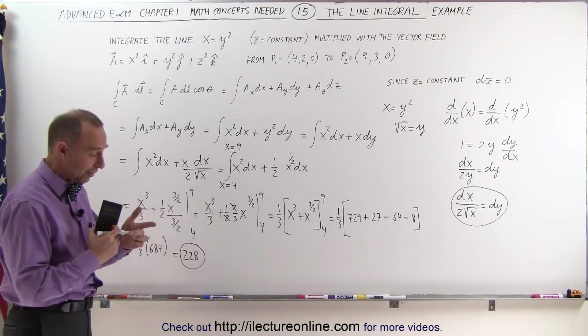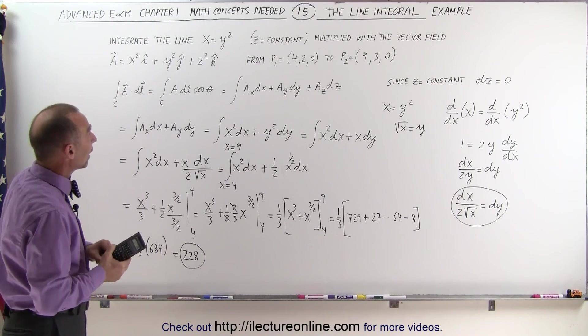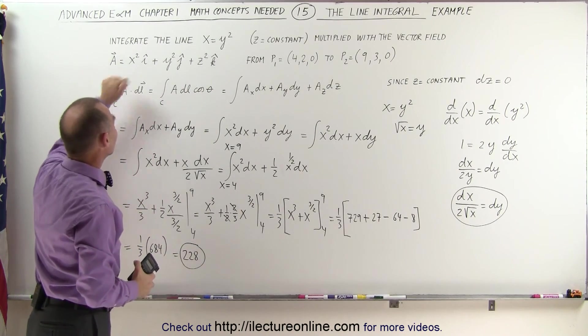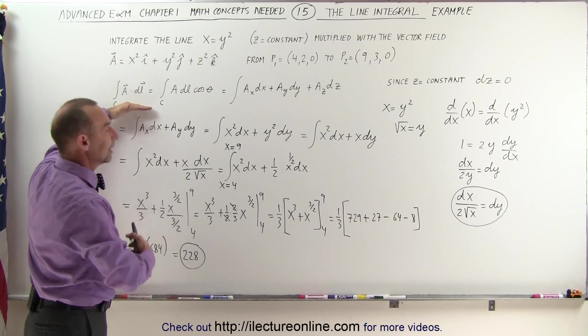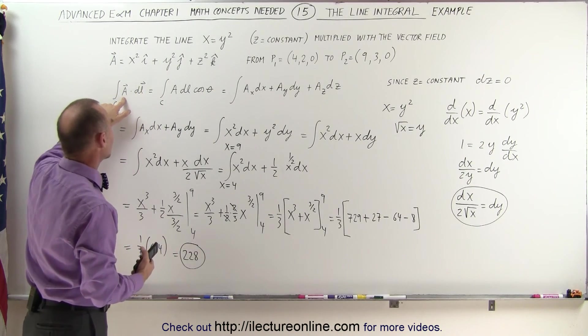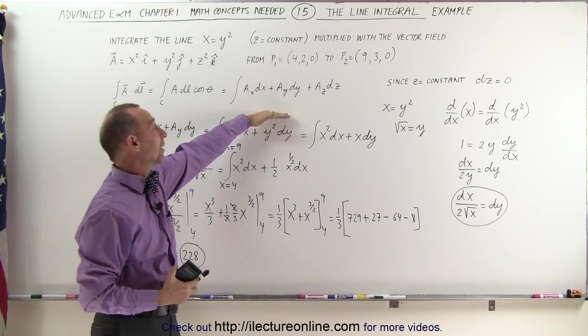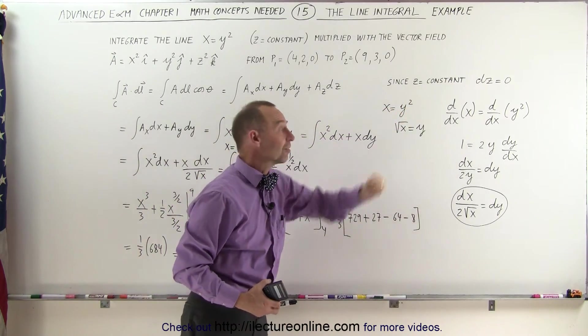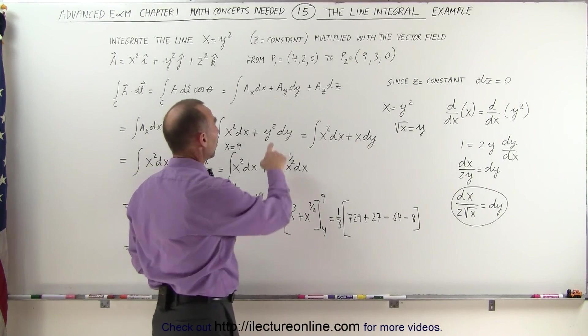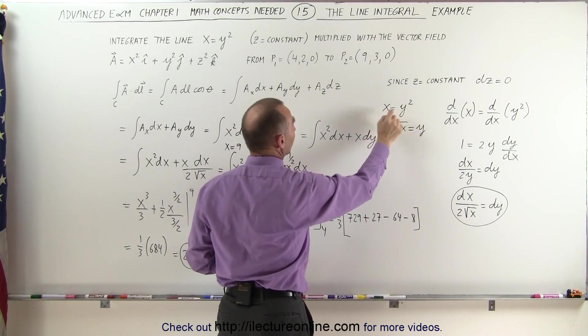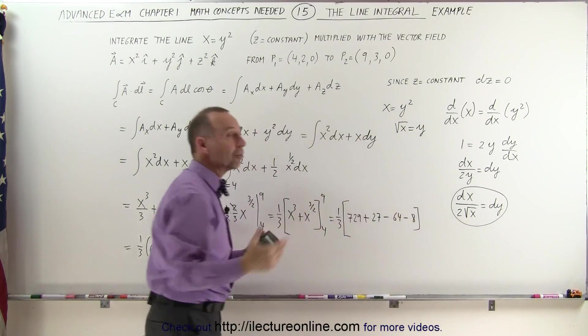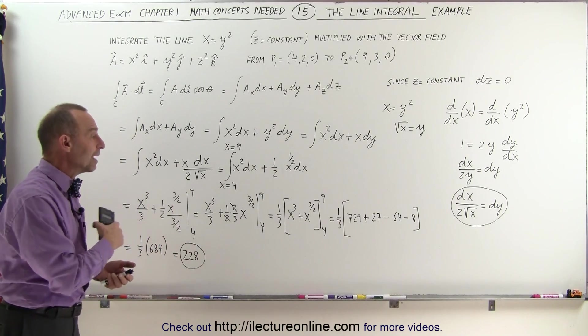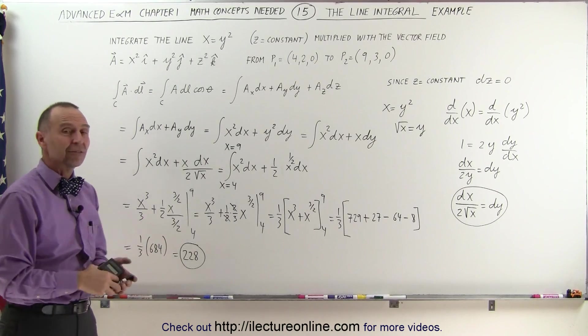So it turns out, the value that we get is a scalar value, 228. We integrated the line x equals y squared from x equals 4 to x equals 9, when we multiply that times the vector field as defined here. Here's the definition of how we integrate across all the line segments along the line, multiply times the vector field. This is probably the easiest format to work with. Then we find the x and y components, x squared plus y squared. We can forget about the z component because we realized that z was constant. Then manipulating the y squared using this relationship, we can replace the y squared by x, and the dy can also be replaced by this. And then it's just integration from that point on. So there's a nice example of how to do a line integral with a vector field.